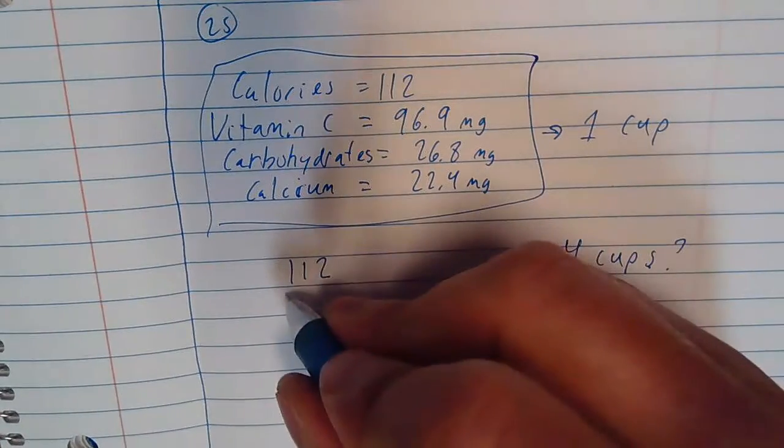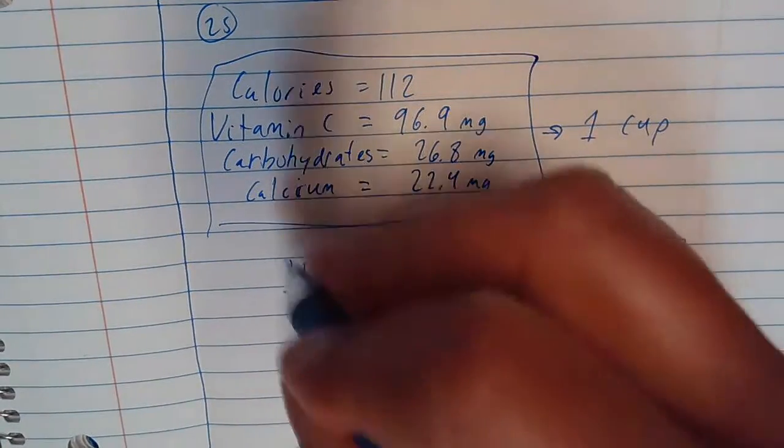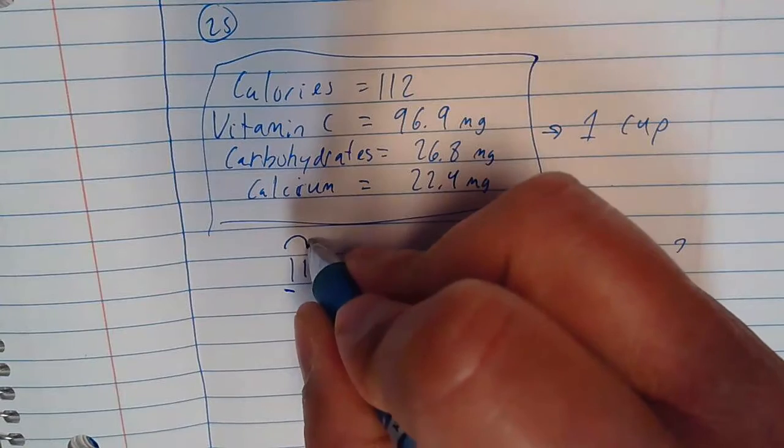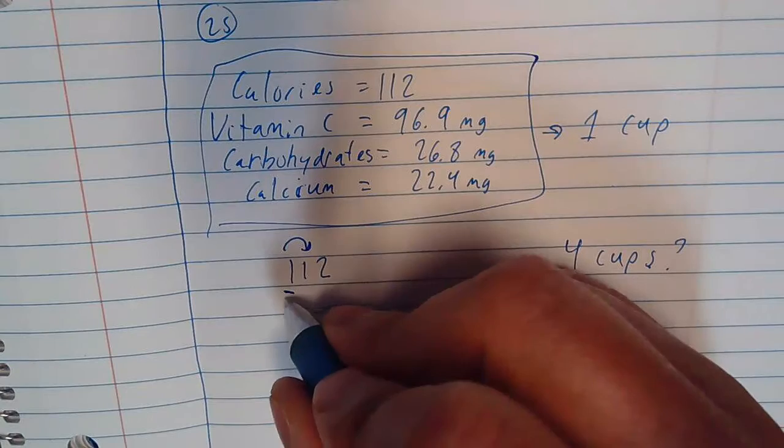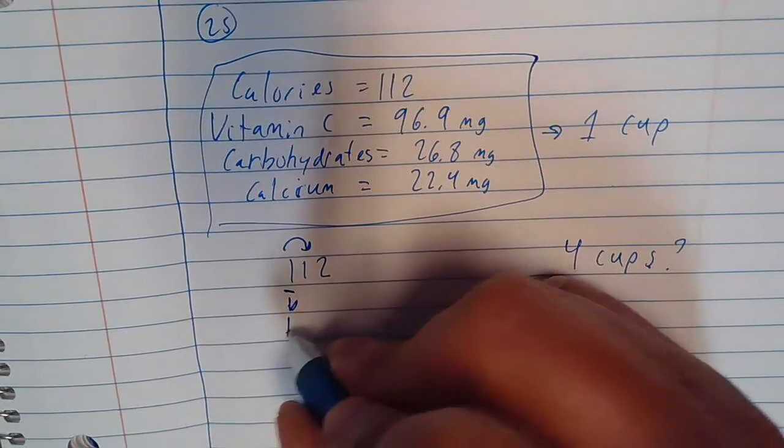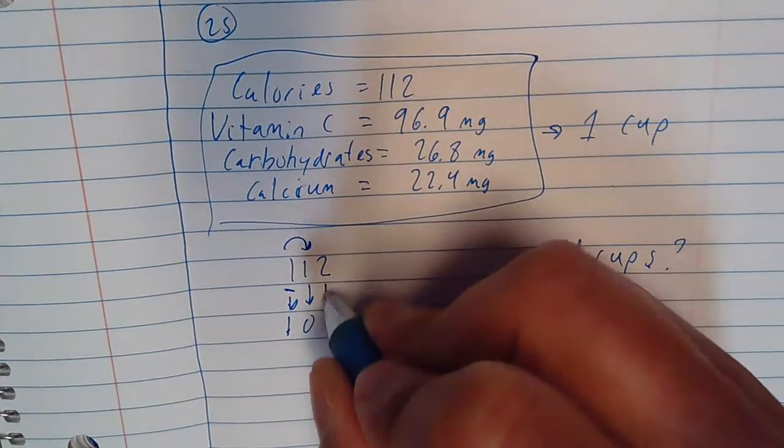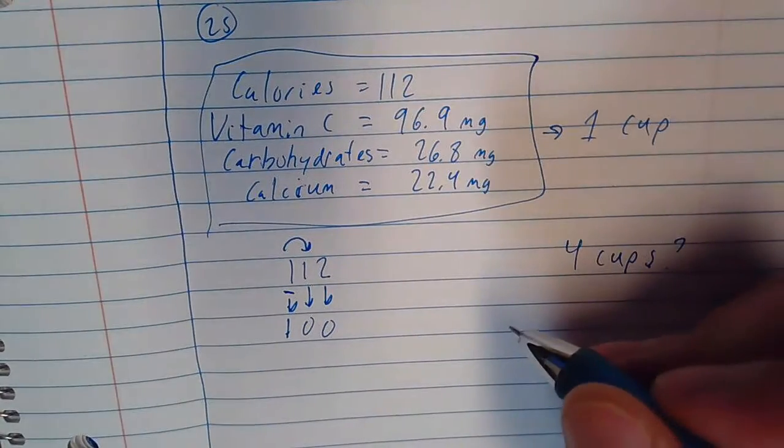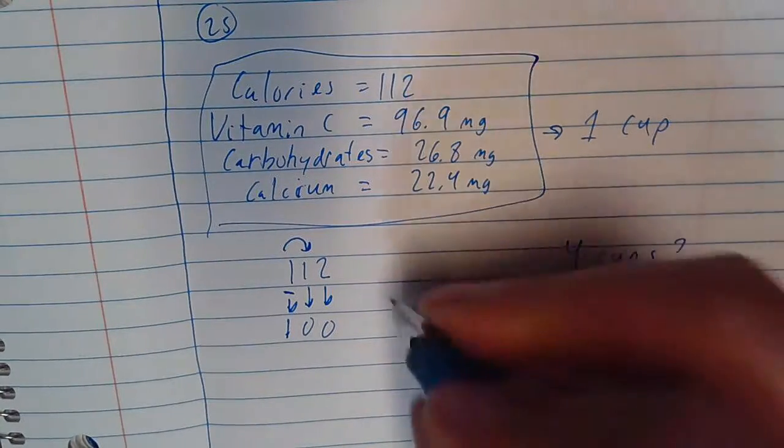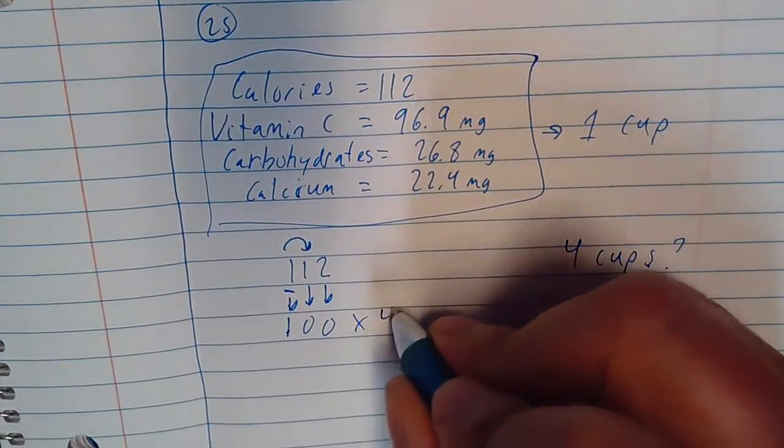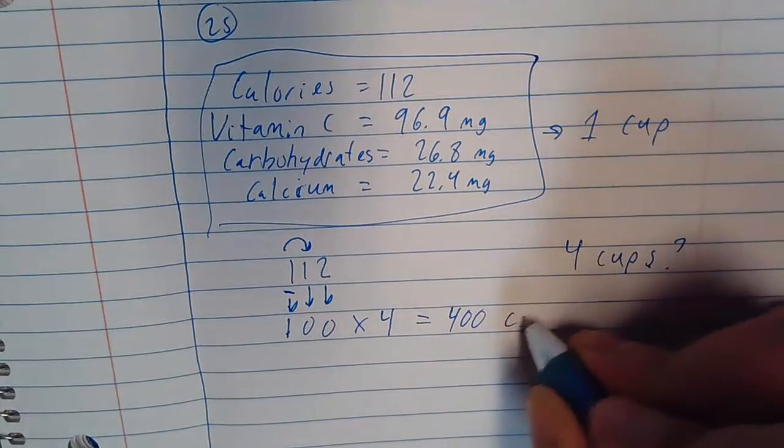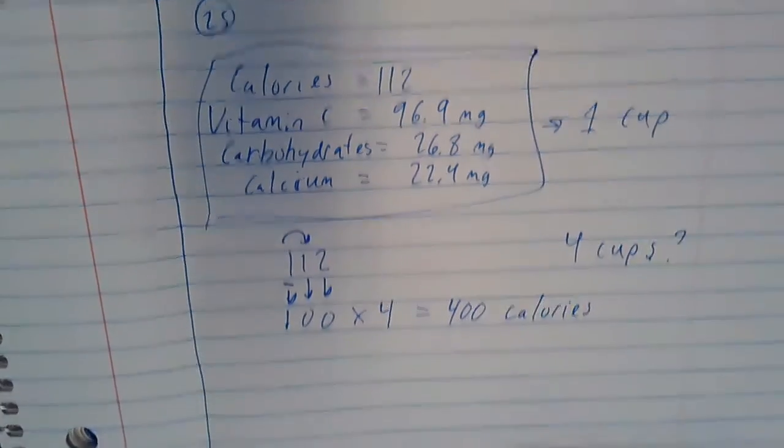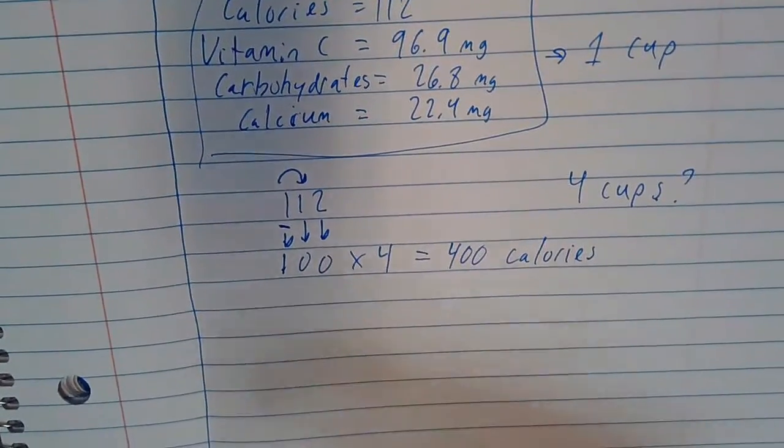So calories, 112. You know what, the greatest place value here is hundreds, I'm going to go here. The number next to it is four or less, so the one stays the same. This becomes one, the other things become zero. That's 100. So 400 calories in four cups or one quart.